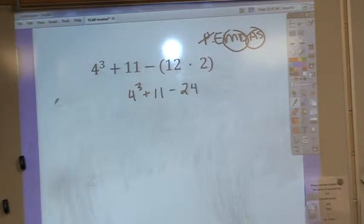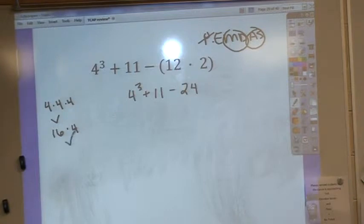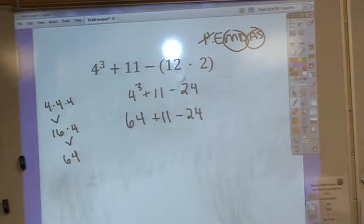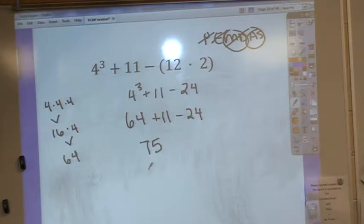Now I'm going to move on to exponents. I have 4 cubed off to the side. I'm going to show that as 4 times 4 times 4. Make sure you're taking your time. 4 times 4 is 16, and I still have one more 4 to multiply by. 16 times 4 is 64. So now I'm going to rewrite it as 64 plus 11 minus 24. I don't have any multiplying or dividing, so I just have to add and subtract: 64 plus 11 is 75, and then minus 24 gives me 51.